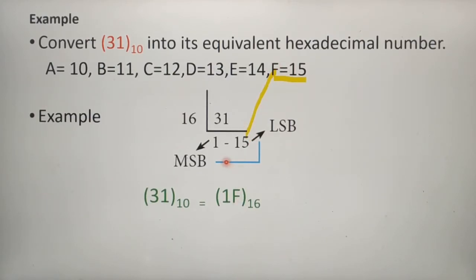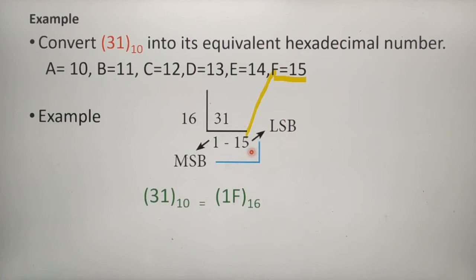So the final solution: write the last quotient 1 followed by the remainder value. The remainder is 15, which we write as F. Therefore, 1F is the proper hexadecimal value for decimal 31.